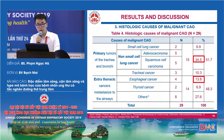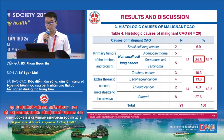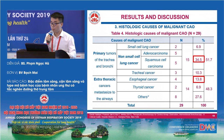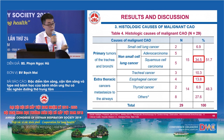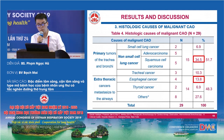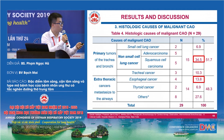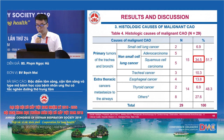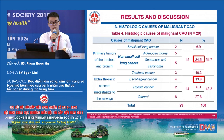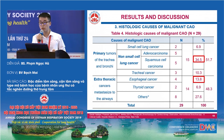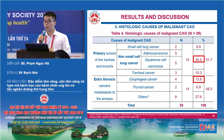Looking at table four, there is no significant difference between the number of patients with cancer originating from inside or outside the airway. In the group of primary cancer at the respiratory system, non-small cell lung cancer accounts for the majority at 34.5%. In the group of primary cancer outside the respiratory tract, metastatic esophageal cancer has a high proportion at 13.8%. This result is consistent with the epidemiology of cancer, as squamous carcinoma usually occurs in male patients who smoke, according to the SARA study.